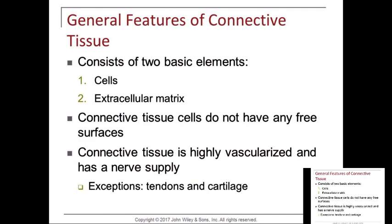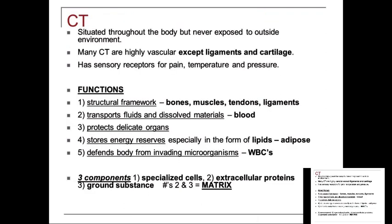These words are often used interchangeably, but they are not — they identify different structures. When you sprain a ligament, it can take a long time to heal due to poor blood supply. Cartilage itself takes a long time to heal because nutrition and nutrients have to diffuse from adjacent structures. Connective tissue is never exposed to the outside environment. Many types are vascular, except for ligaments and cartilage. They're highly sensory, with great receptors for pain, temperature, and pressure.